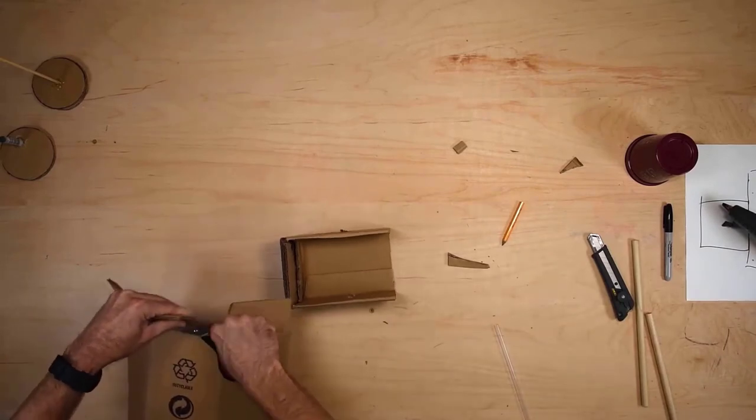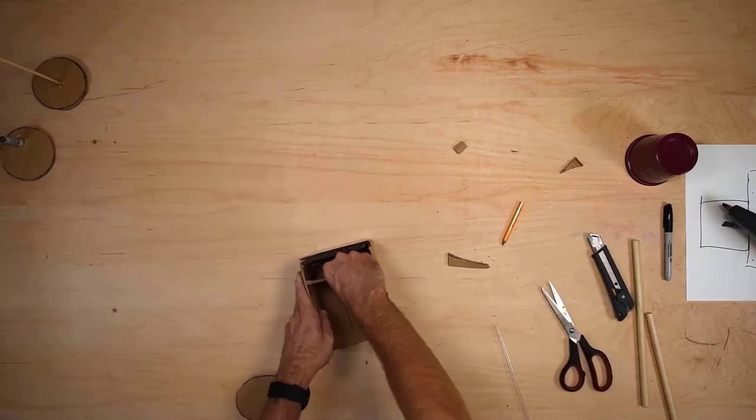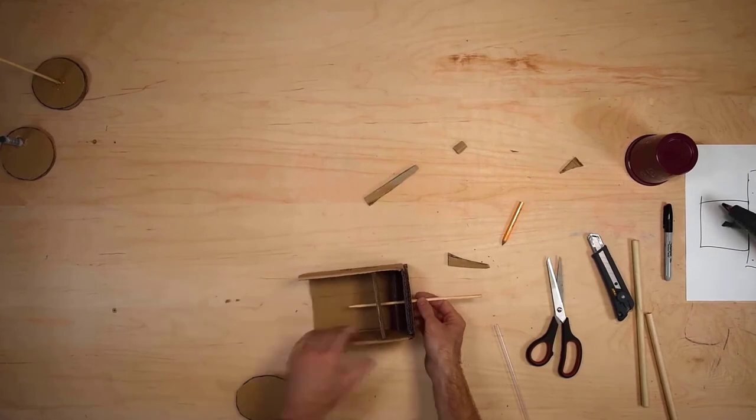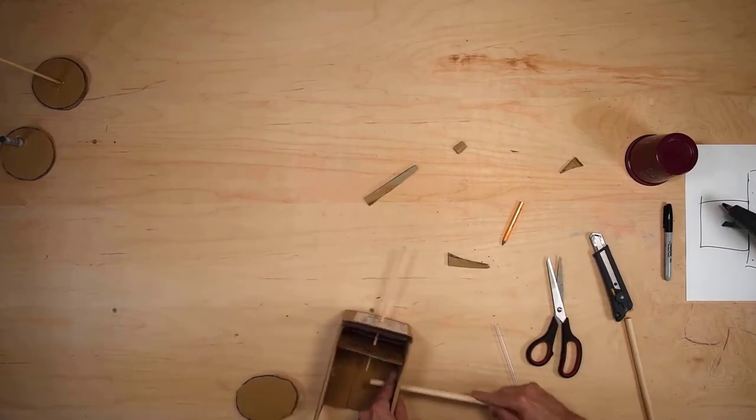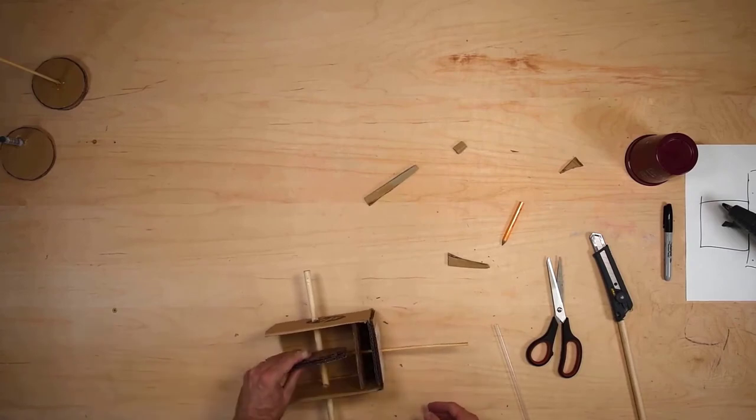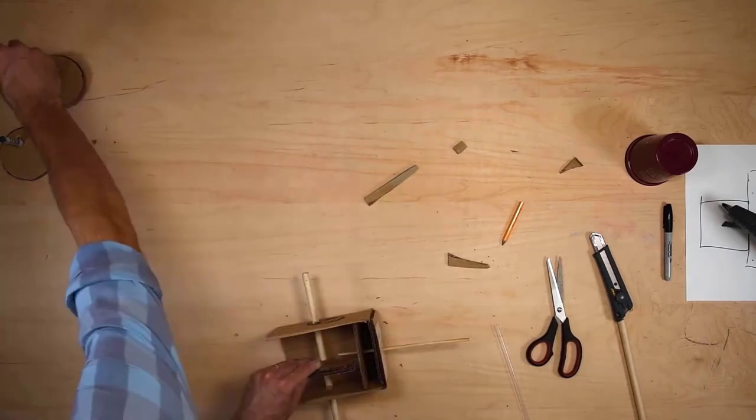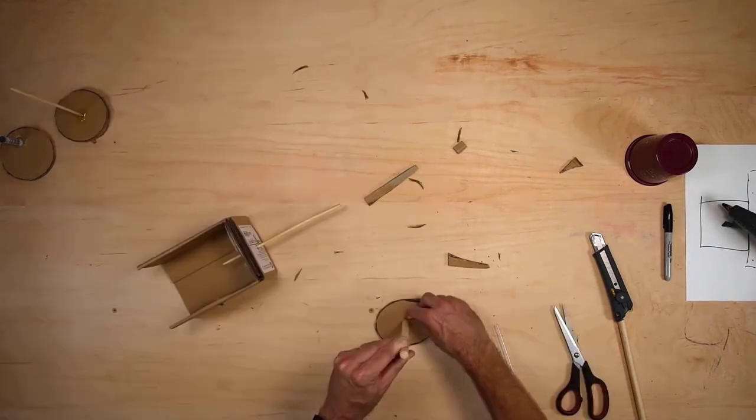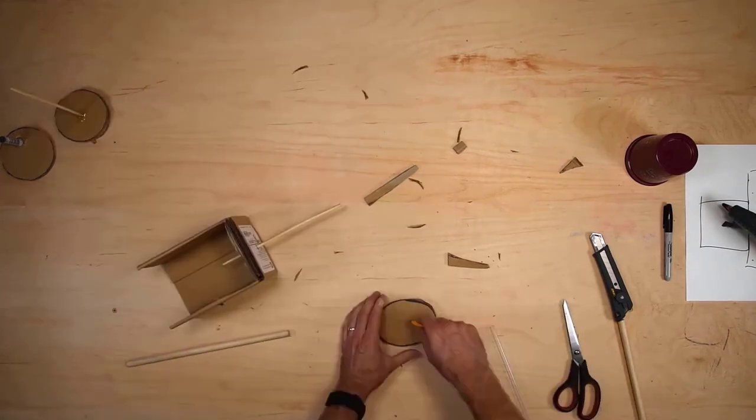One thing I did here is that I reinforced the top of the box because that is where a lot of stress is going to be. The chopstick that you see there will be spinning. And if we reinforce the top of the box, it will work better. So if you're going to reinforce it, make sure you check your spacing to make sure that all works out good.